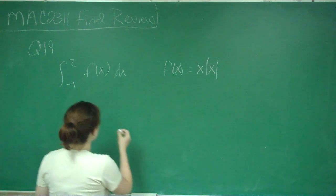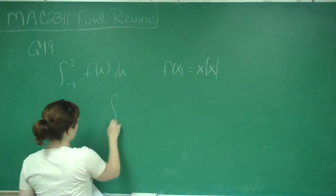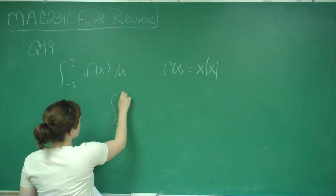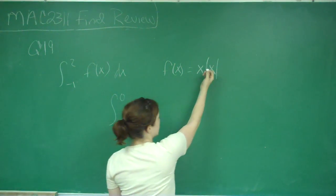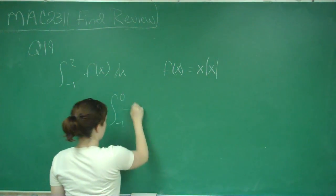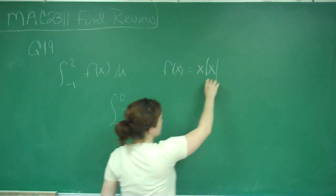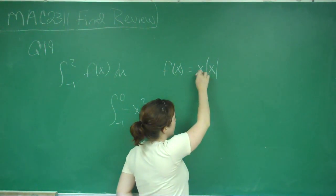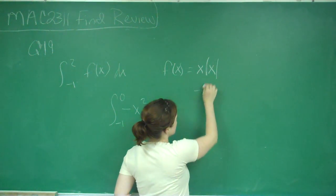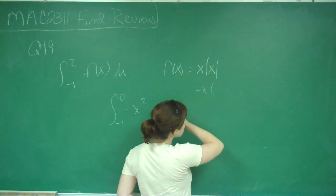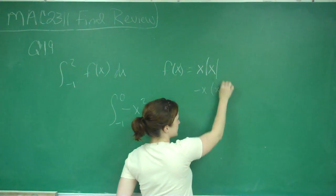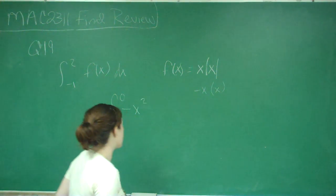So what we need to do is break up our interval here. So from negative 1 to 0, our function without the absolute value will be negative x squared because in here, our x will be negative, so negative x. And then whatever this is will be positive x because it's the absolute value, so that gives us negative x squared.